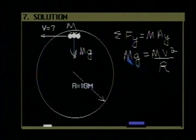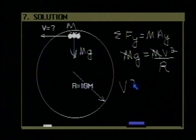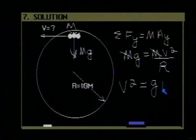Mass appears on both sides of this equation and can be canceled out. And we can solve for V squared. V squared is equal to G multiplied by R.